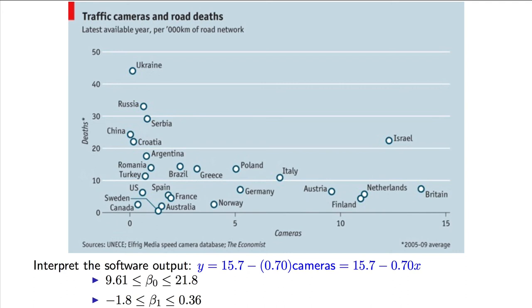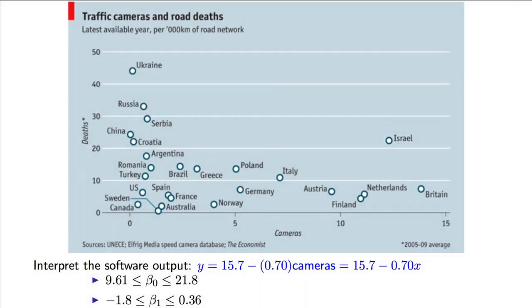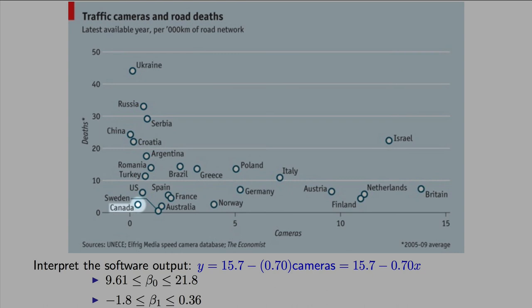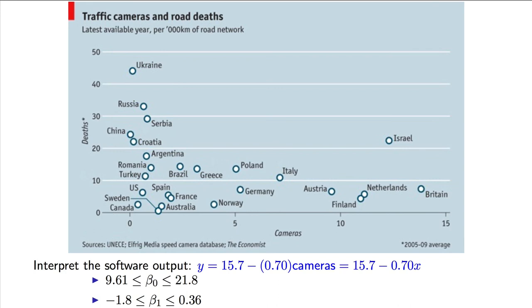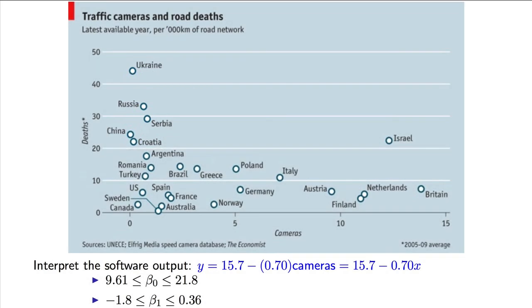There are some other interesting questions we can also ask of this scatter plot. Why is Israel up here? Why does it have such a high number of deaths on its roads, despite a large number of traffic cameras? Take a look at Canada's location here. Very few cameras and very few deaths. What are Canada, Sweden, Australia, and the United States doing that is very effective, compared to countries such as Britain and the Netherlands? Similar number of deaths, yet very different number of cameras. Also, what is different between those points down here and China, Croatia, Serbia, Russia, and the Ukraine up here? Large number of deaths, but same number of traffic cameras. All of these are the thoughts that you should have in your mind when plotting and visualizing data, and especially when investigating a least squares model.